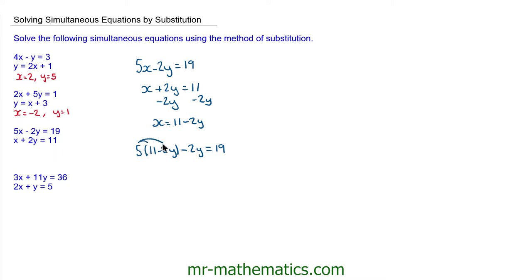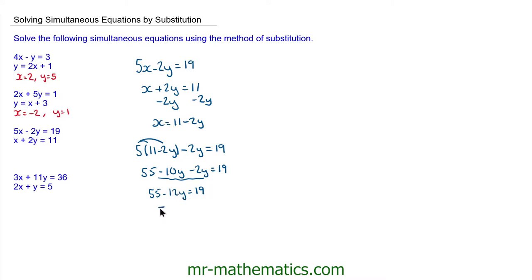We can expand these out: so 55 minus 10y minus 2y will make 19. We can collect these two together, so we have 55 minus 12y is 19. Now I'm going to make negative 12y positive by taking it to the other side: so 55 is equal to 19 plus 12y. We'll take away 19 from both sides, so 36 is equal to 12y. We'll divide both sides by 12, so y is equal to 3.